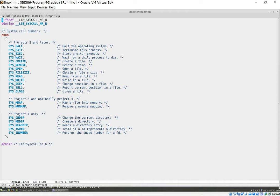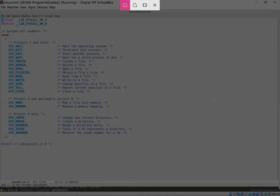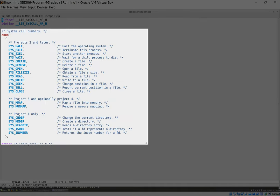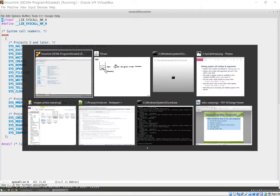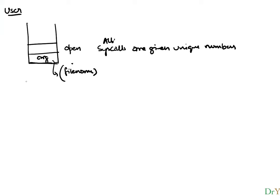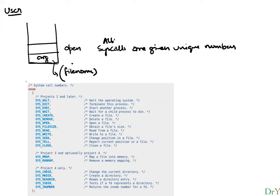The syscall numbers are stored as an enumerated data type. Looking at that enum, open happens to be number six — counting: zero, one, two, three, four, five, six. So we put a six on the stack, the stack pointer is pointing there, and we trigger interrupt 0x30.